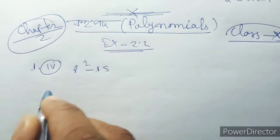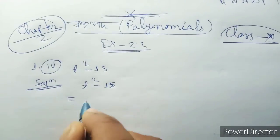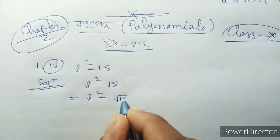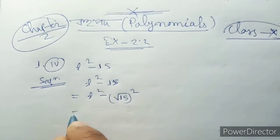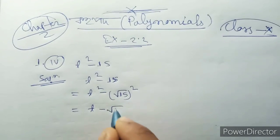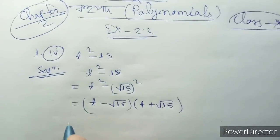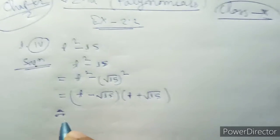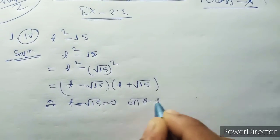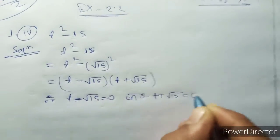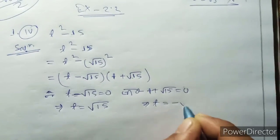This is t squared minus 15. Solution: t squared minus 15 equals t squared minus root over 15 squared. This is a squared minus b squared, so a minus b, a plus b. Equal t minus root over 15 equals 0, t plus root over 15 equals 0, implies t equals root over 15 and t equals minus root over 15.